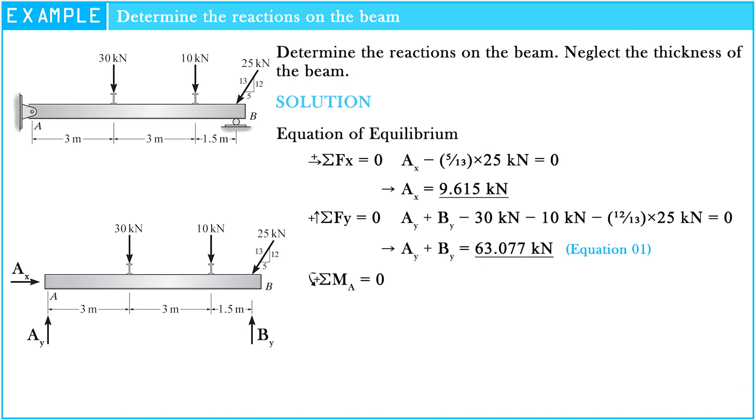The sigma of moment at point A equals zero. So we can compute the value of BY. Hence, BY = 43.077 kN. Let this result be equation two.